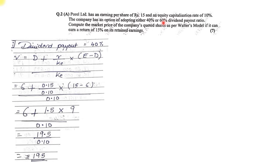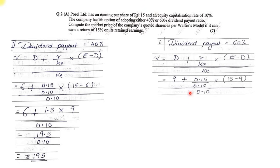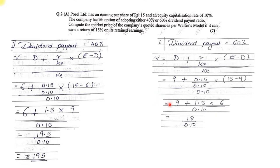For dividend payout at 60 percent: Dividend = 15 × 60% = rupees 9. Substituting: V = [9 + (0.15 ÷ 0.10) × (15 − 9)] ÷ 0.10 = [9 + 1.5 × 6] ÷ 0.10 = [9 + 9] ÷ 0.10 = 18 ÷ 0.10 = rupees 180 per share. This is how you solve the sum based on Walter's model, the OR option for question 2A.